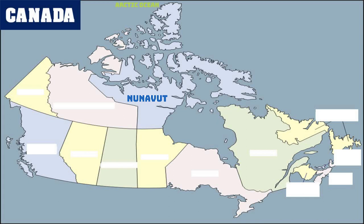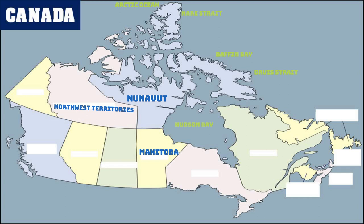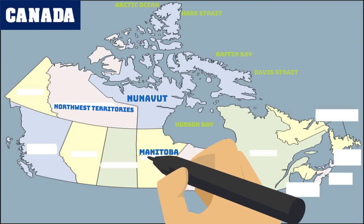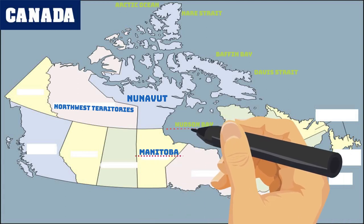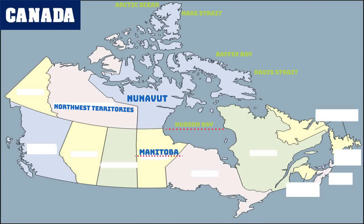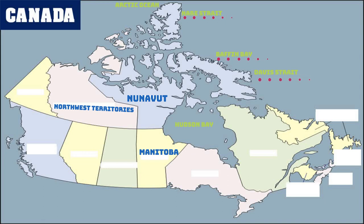Let's look at what surrounds Nunavut — what are its boundaries? In the south, Nunavut shares boundaries with Manitoba and Hudson Bay. To the east is a body of water flowing from the north southward, consisting of Davis Strait, Baffin Bay, and the Nares Strait.